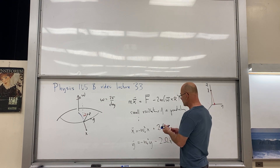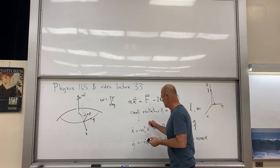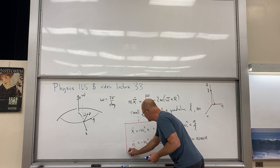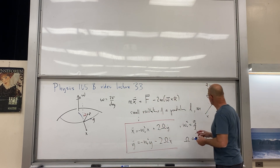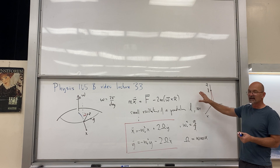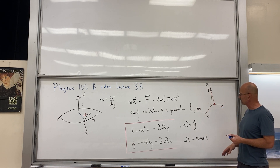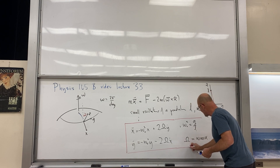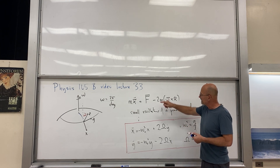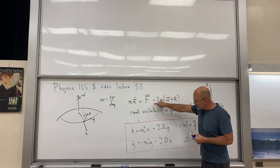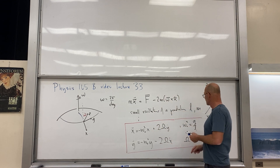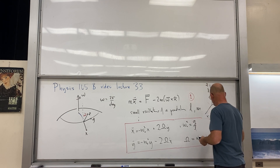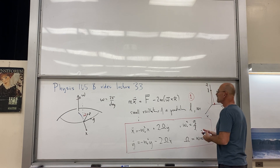I want to make this into a homework problem, because I did most of these steps but not all of them. For the homework, we want to make sure we justify the steps from the general equation of motion — call it equation one — down to these coupled pendulum equations, equation two.